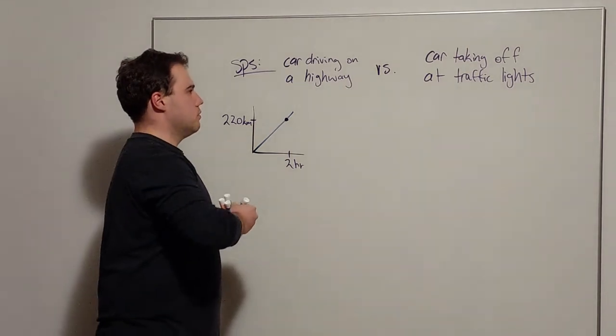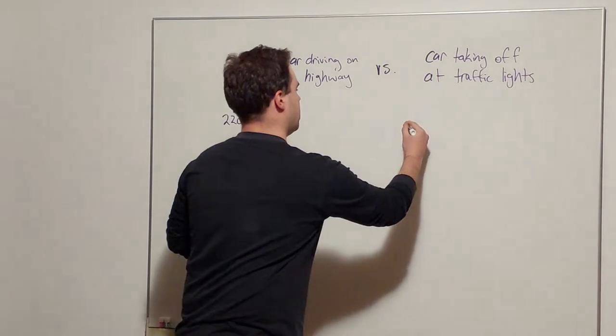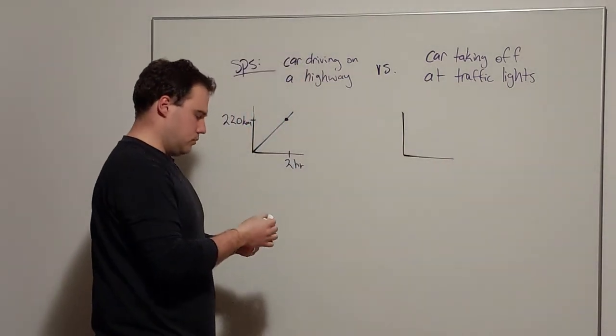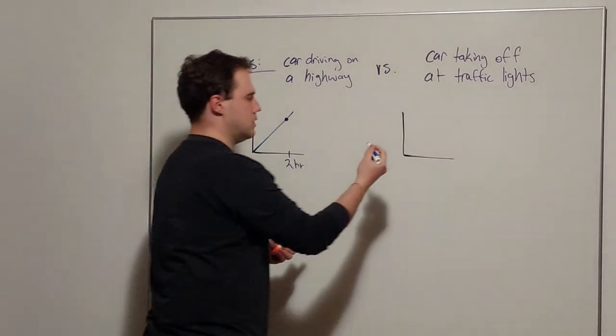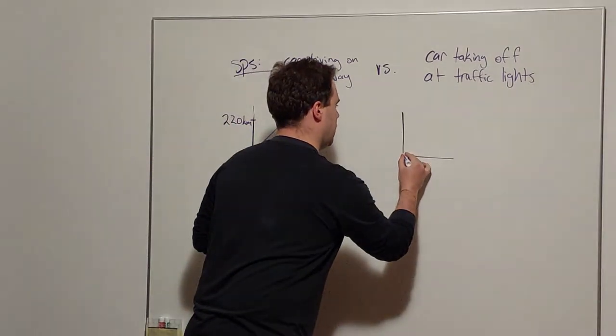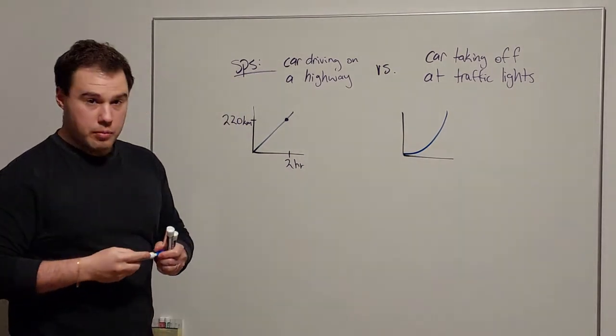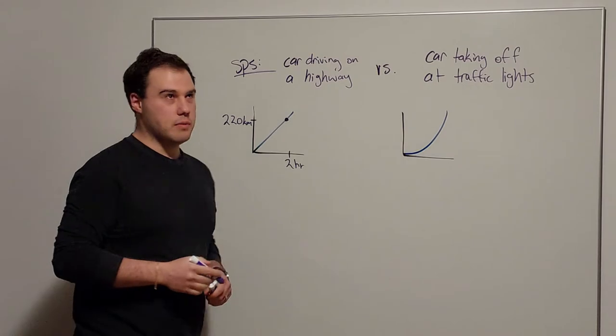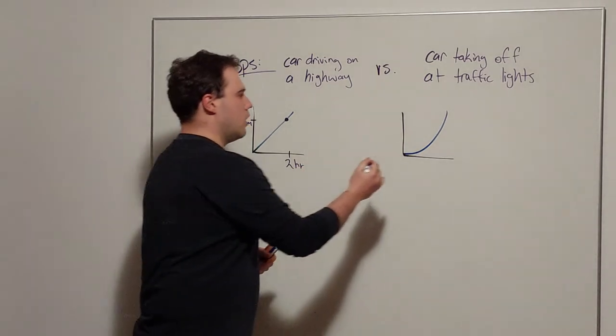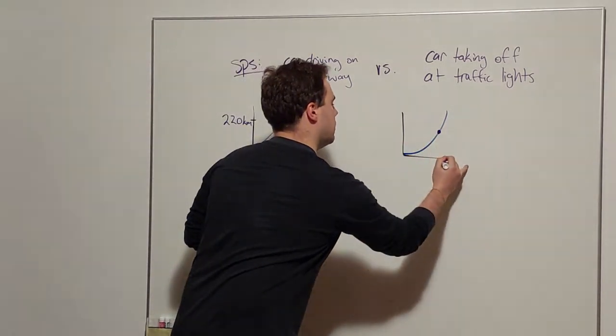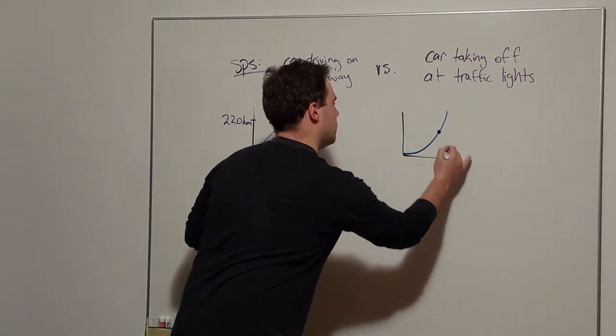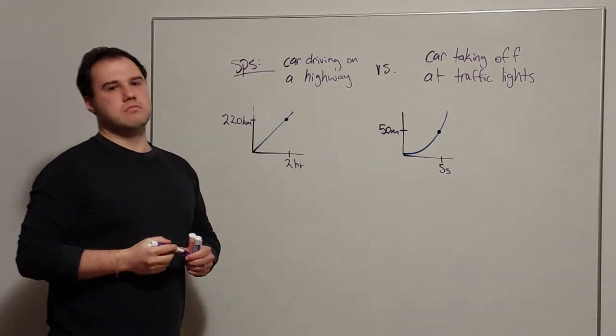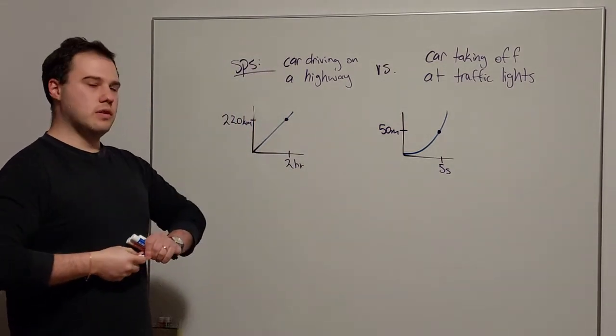Alright, with this other context, taking off at the traffic lights with constant acceleration, distance over time is going to look something like this. It's going to look like the graph of a parabola quadratic equation, which later on you'll actually be able to see why that's the case. And maybe in this case we've got after five seconds we've gone 50 meters.